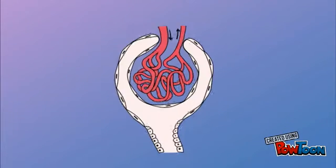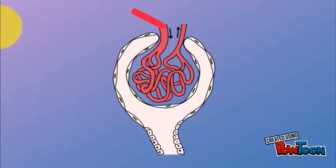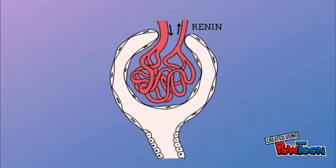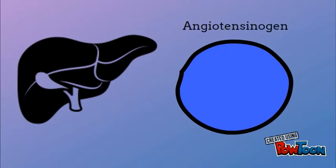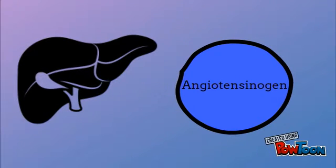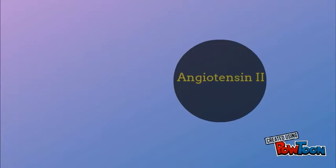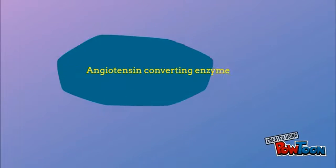The juxtaglomerular cells in the kidney convert pro-renin into renin, which is then secreted directly into the circulation. Plasma renin then cuts a short peptide off a plasma protein known as angiotensinogen. Angiotensin 1 is then converted to form an octopeptide known as angiotensin 2 by the enzyme angiotensin converting enzyme, or ACE.